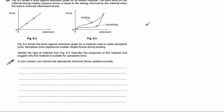And finally, part B shows us a force extension graph for an elastic material. The work done on this material during loading is equal to the energy returned by the material when the load is removed.